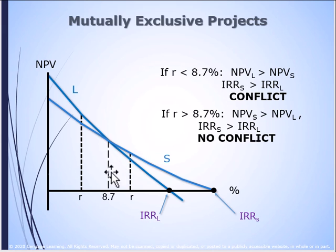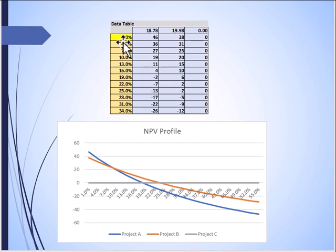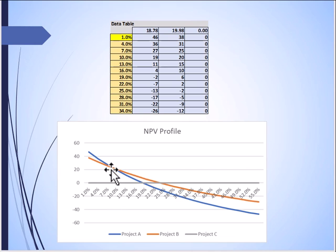There is a crossover point, roughly 8.7%. We can see that there are certain times when L is better or higher than S. There is a workbook provided that has a worksheet for net present value profiles, where you can input the cash flows and it will calculate the net present value profiles for the projects. You can see here is the crossover point.